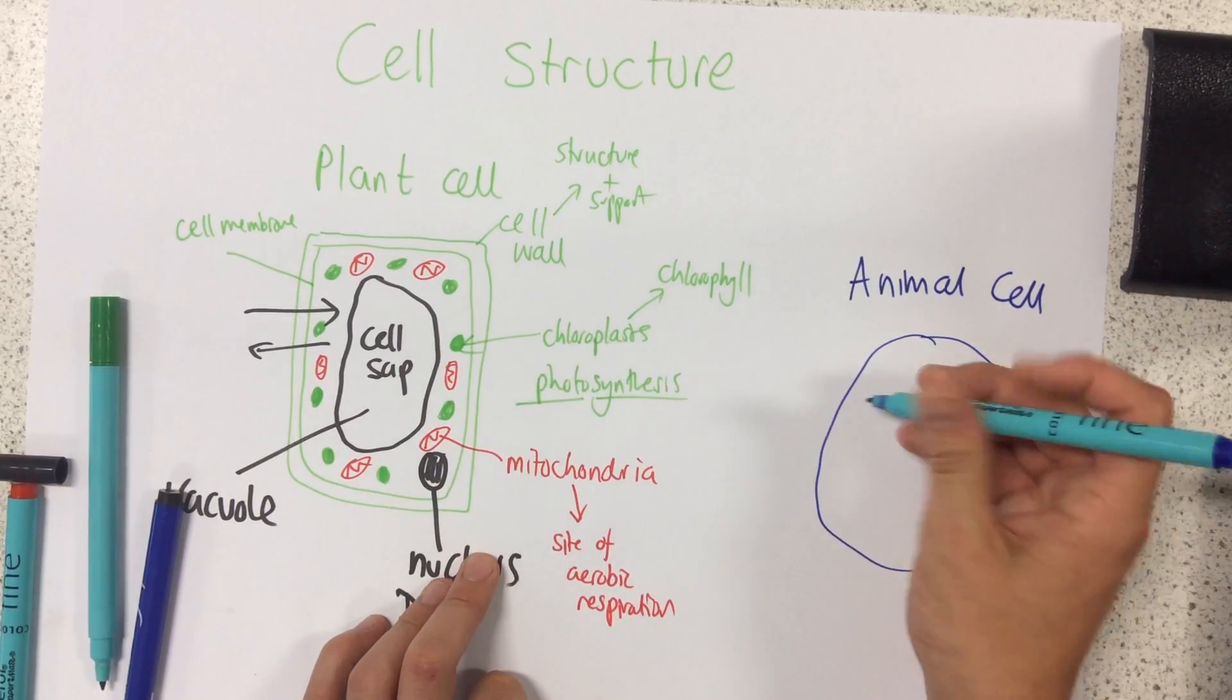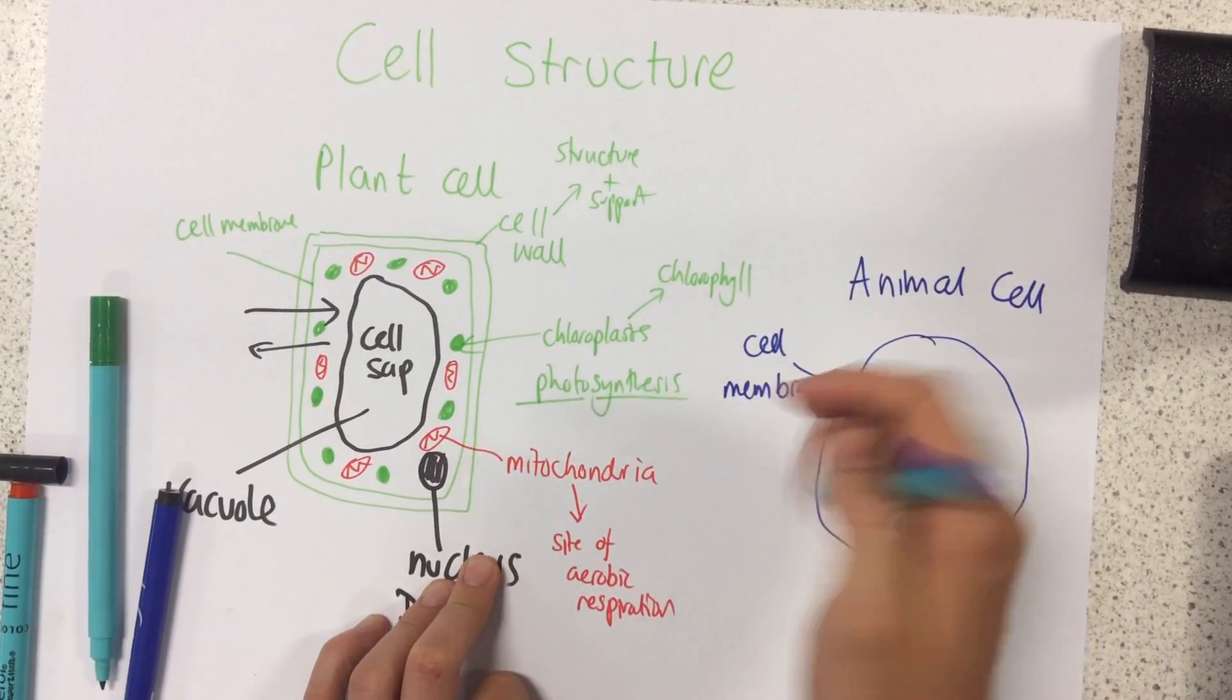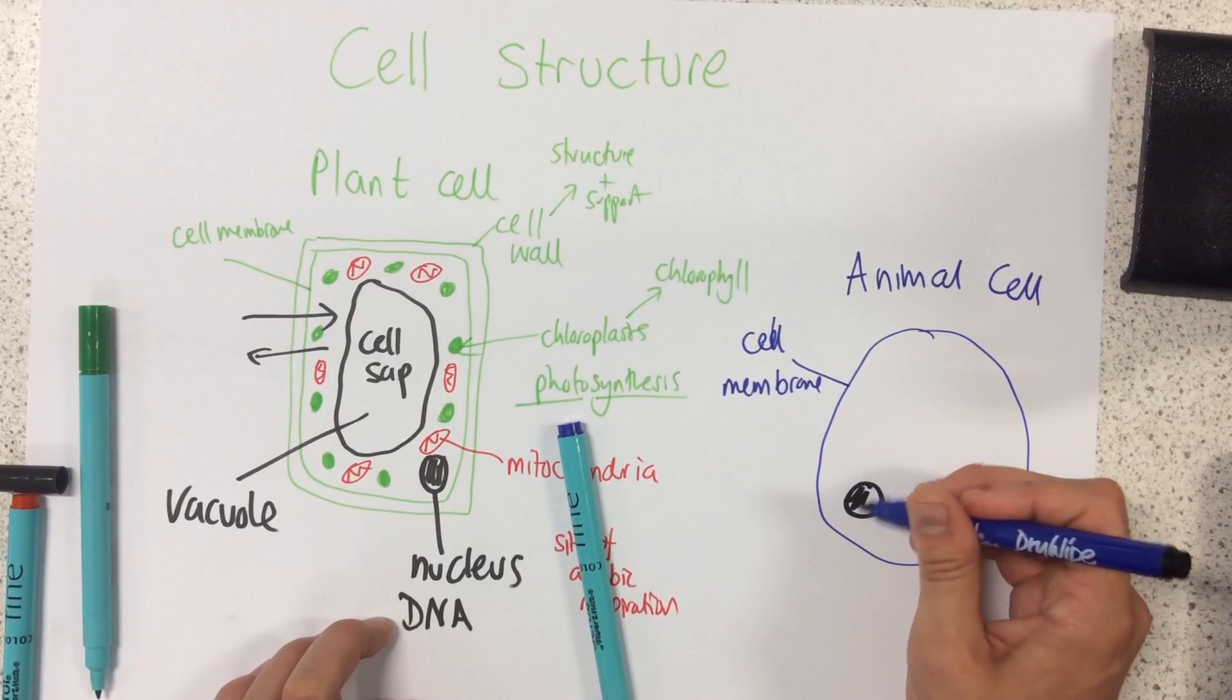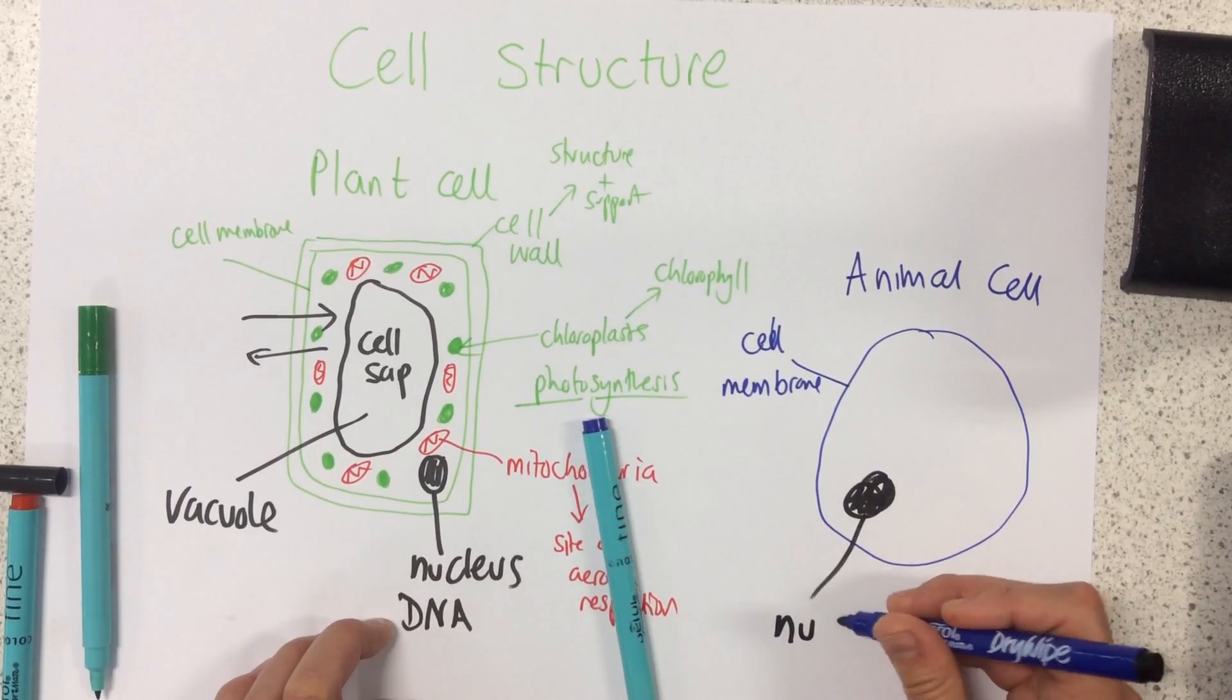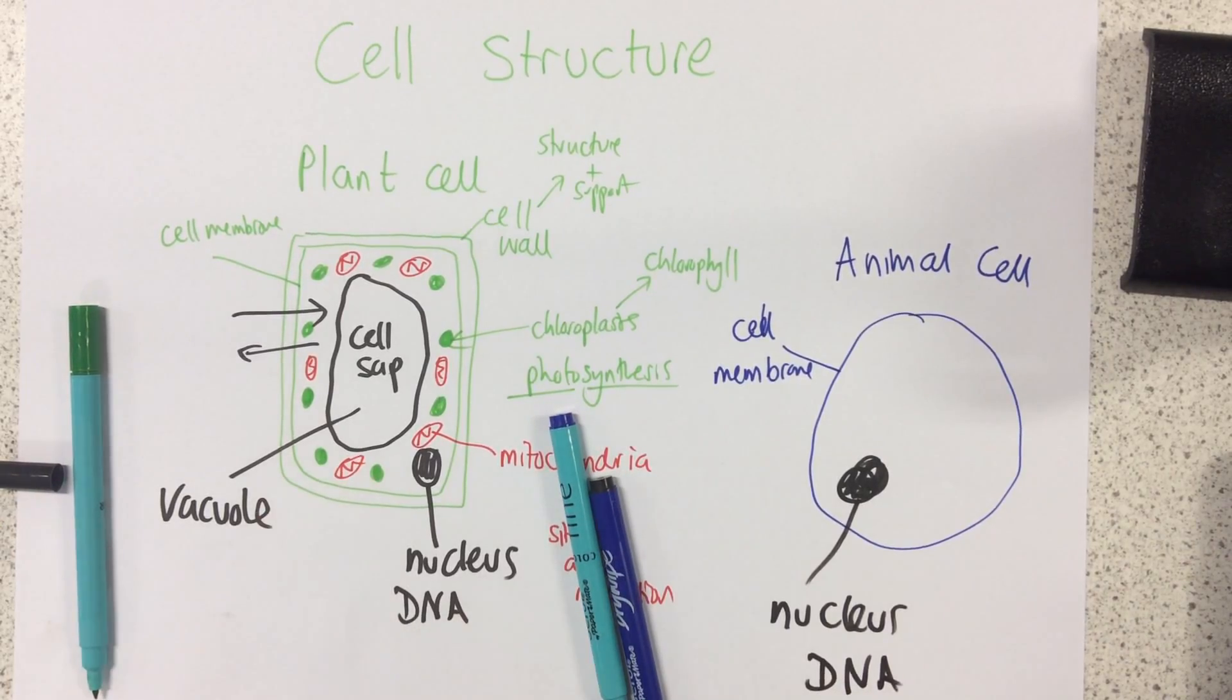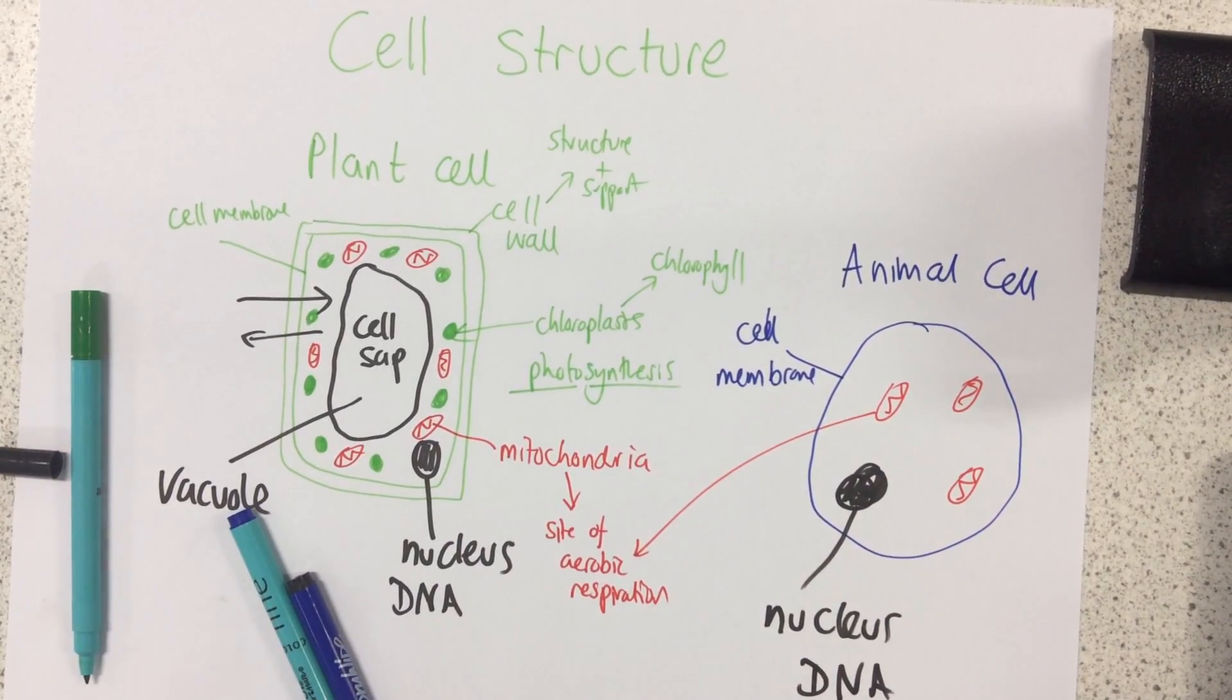So just like the plant cell it has a cell membrane, also does exactly the same job. That helps to control what comes in and out of the cell. It also, just like the plant cell, contains a nucleus. So this nucleus contains the DNA. Also just like the plant cell it contains mitochondria. Again exactly the same job, the site of aerobic respiration.